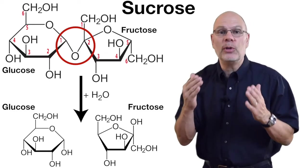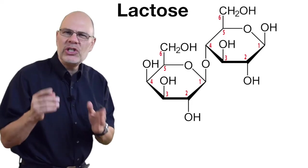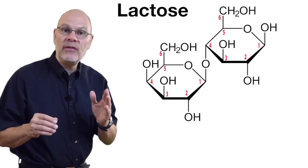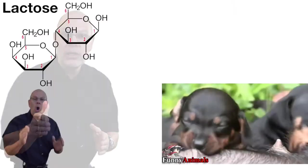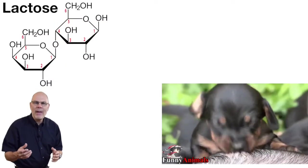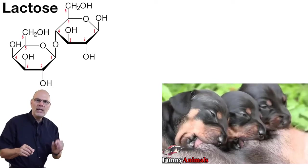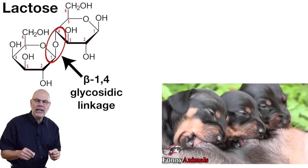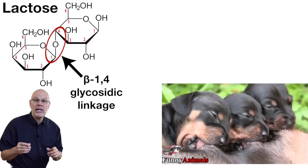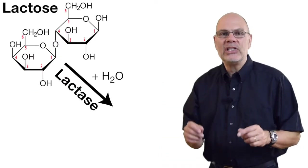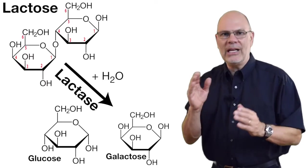Sucrose is a digestible sugar. The last disaccharide we'll need is lactose. It's the sugar in milk, and it consists of a glucose linked to another monosaccharide, galactose. All mammals drink milk as infants — that's what makes us mammals. In order to digest the lactose in milk, we need to be able to break this beta-1,4 glycosidic linkage between the glucose and the galactose, and all mammals are born with an enzyme that enables them to do that. It's called lactase, and it takes lactose and breaks it apart into glucose and galactose.